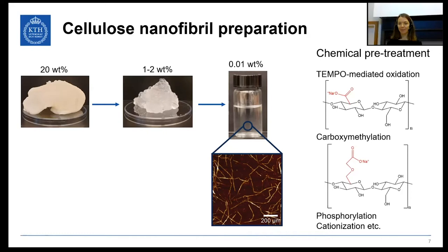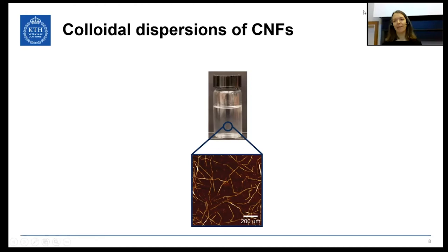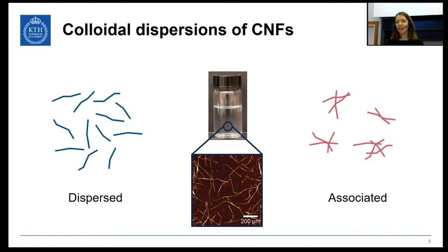Dispersions of CNFs are an example of a colloid — generally described as a mixture of discrete objects of one substance dispersed in a continuous medium of another substance, where these objects should have at least one dimension in the nanoscale. Most CNF-based materials are prepared starting from such colloidal dispersions, and the properties of the final materials are to a large extent governed by how well the fibrils are distributed and dispersed. Therefore, it is important that the fibrils in the original dispersion are well dispersed — as liberated or individualized as possible — and should not have formed aggregates. Understanding the colloidal behavior of CNFs is essential to achieve this.